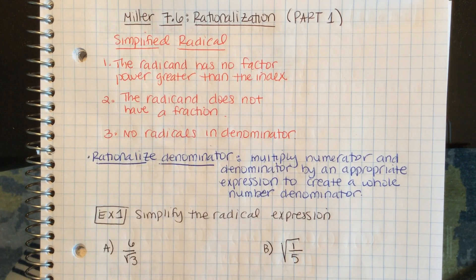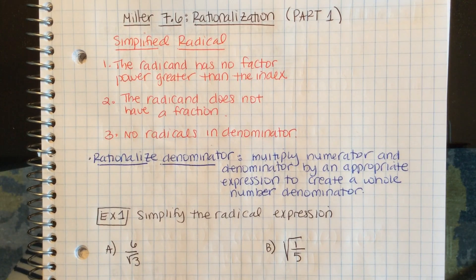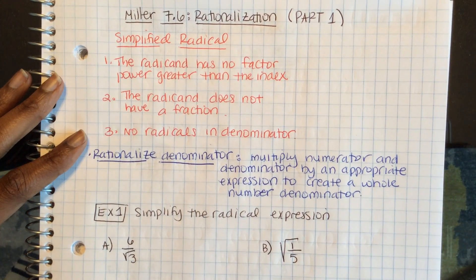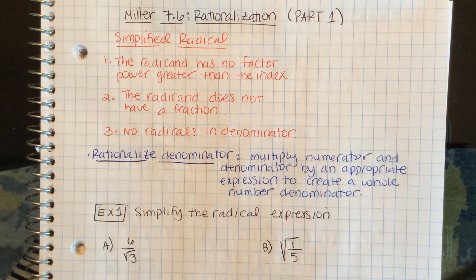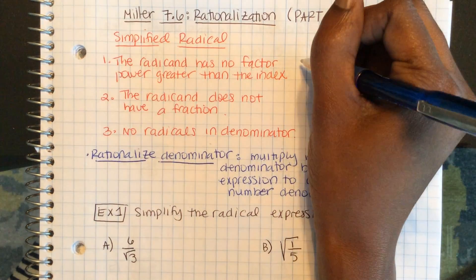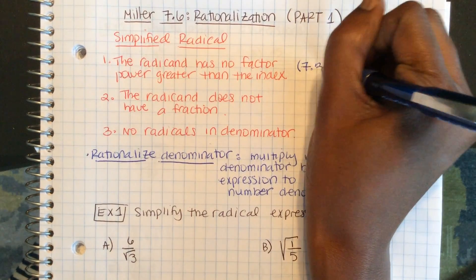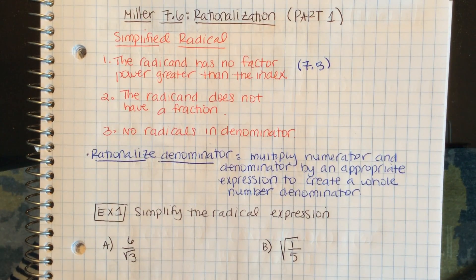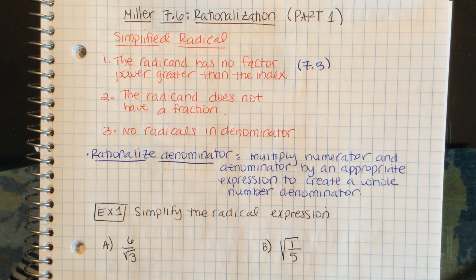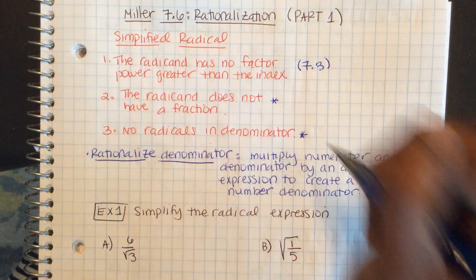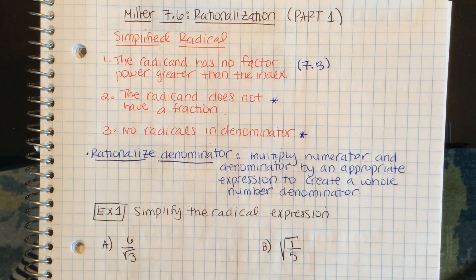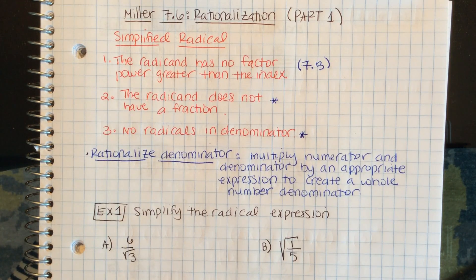So, remember we defined what a simplified radical is by these three rules. Number 1, the radicand has no factor power greater than the index. We learned how to simplify those in Section 7.3, if you want to look back on that. Now, for 7.6, we're going to focus on these two: when the radicand does have a fraction, or it has a radical in the denominator.